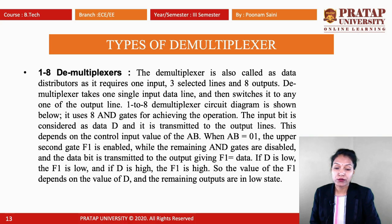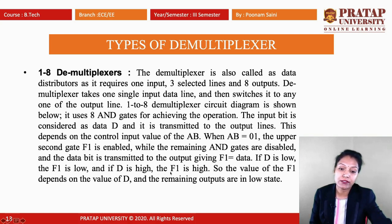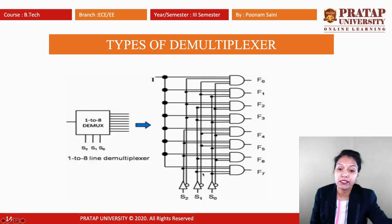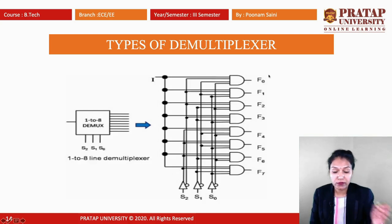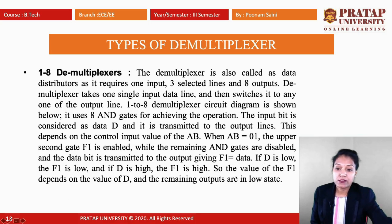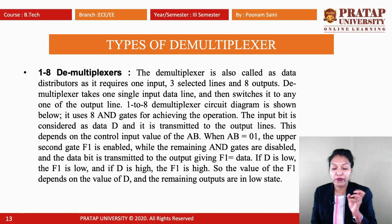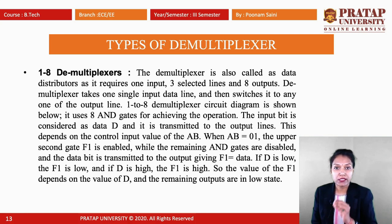The output value of the enabled gate depends directly on D: if D is low, the output is low; if D is high, the output is high. The remaining outputs remain in the low state. So the output of the selected gate is entirely determined by the value of D.